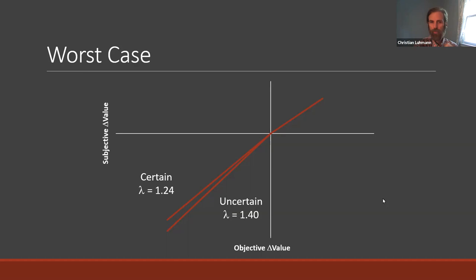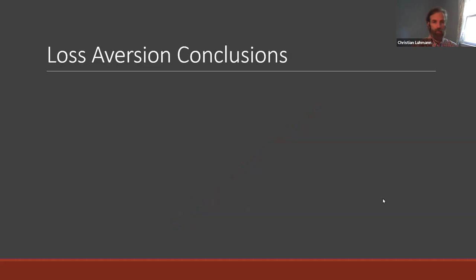To wrap up this brief chapter: manipulations of uncertainty did in fact modulate loss aversion as this account suggests — at least consistent with this account. There are many other predictions and ways to chase after this theoretical account of loss aversion, but it's yet another example of a behavioral quirk that as of right now doesn't have a tremendous amount of mechanistic explanation, but possibly is due to something related to uncertainty.